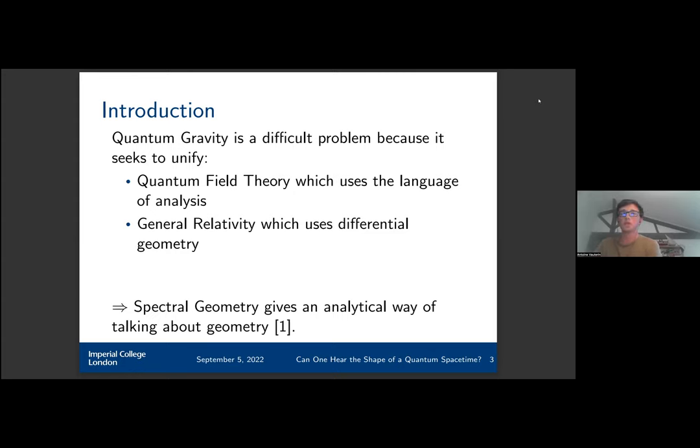So it could be interesting to find an area of mathematics that can bridge this gap. One such area is spectral geometry, which gives us an analytical way of talking about geometry.